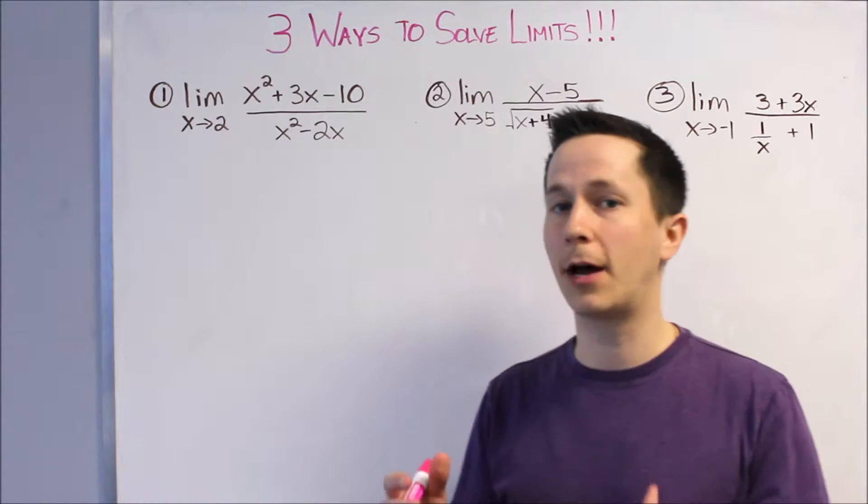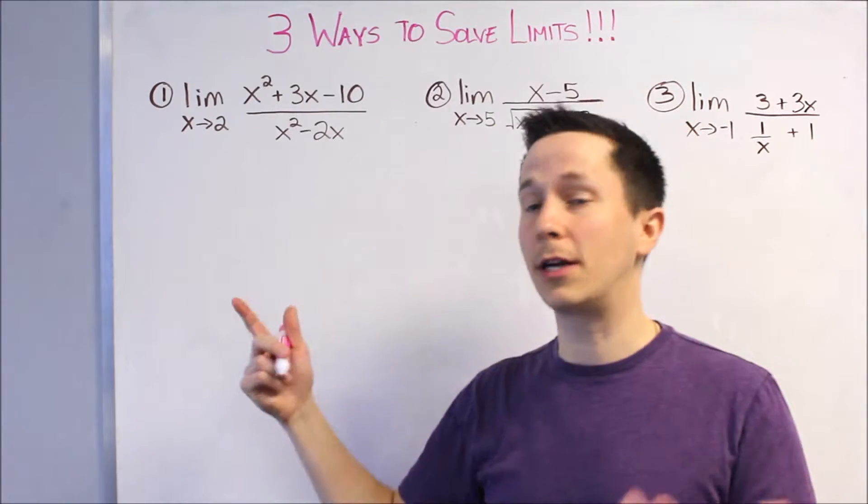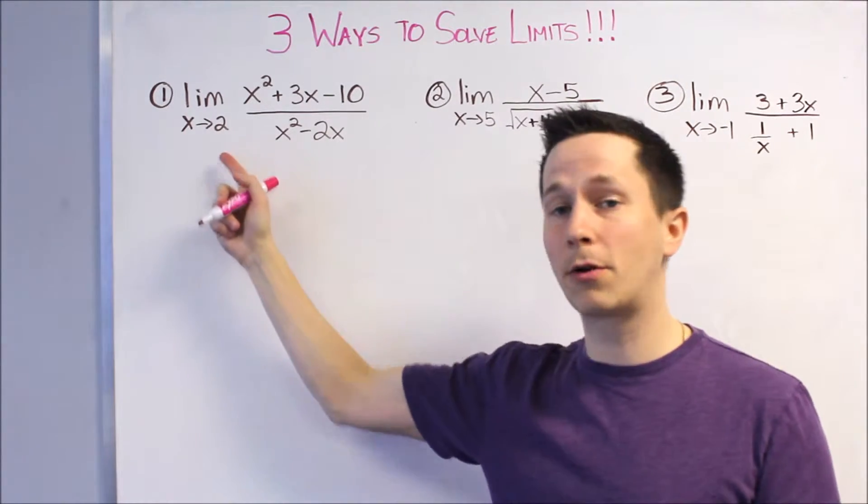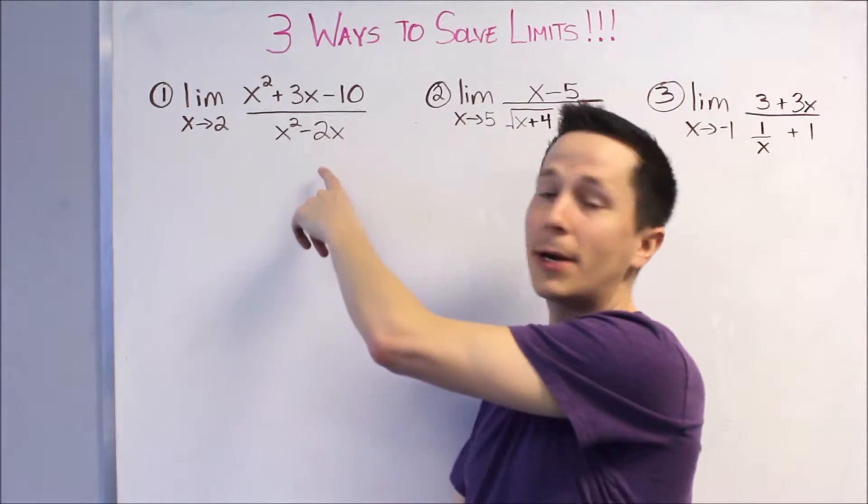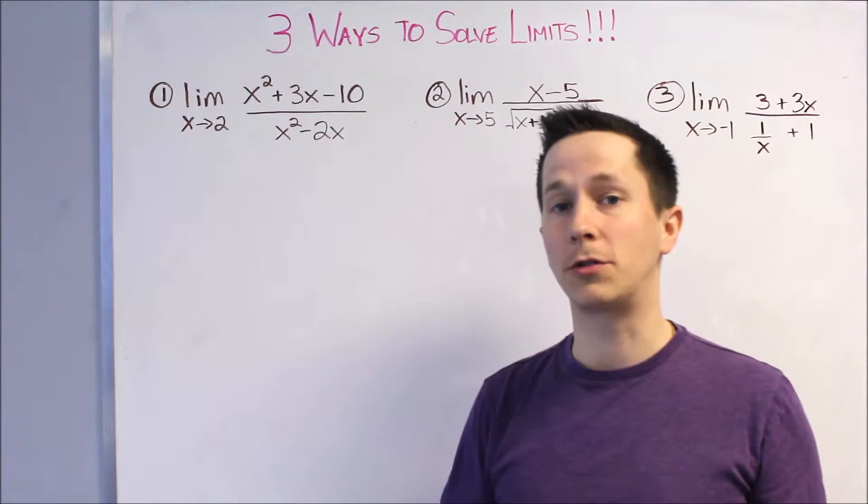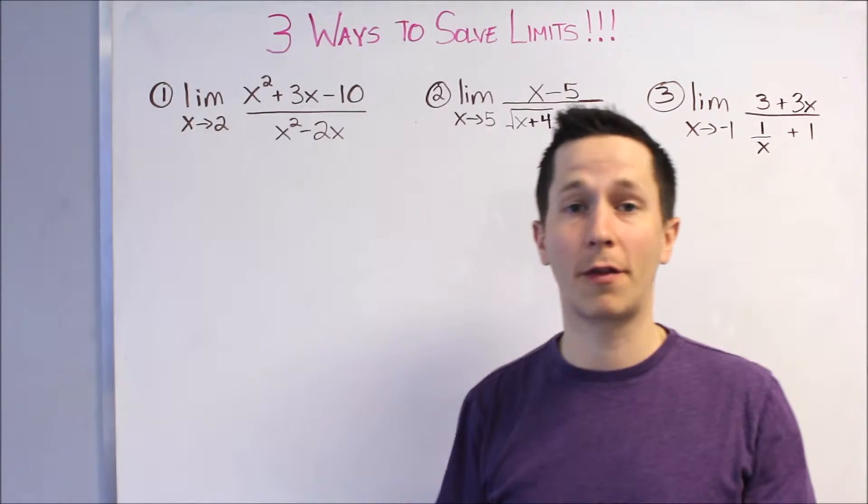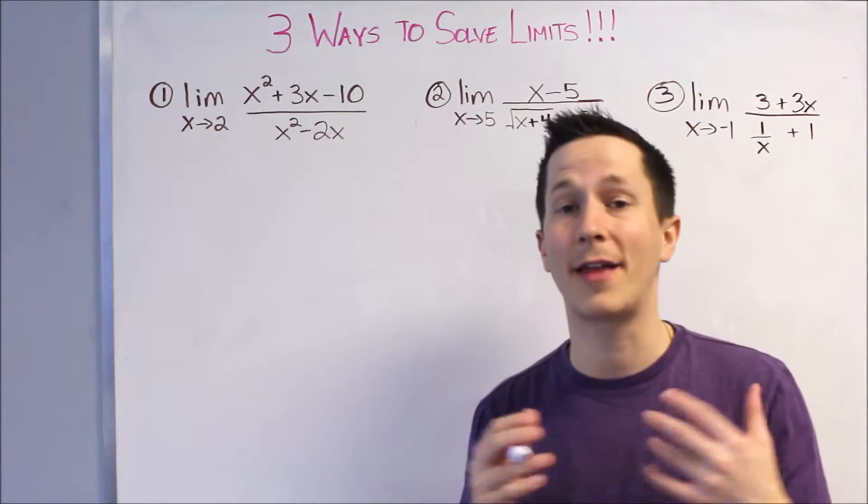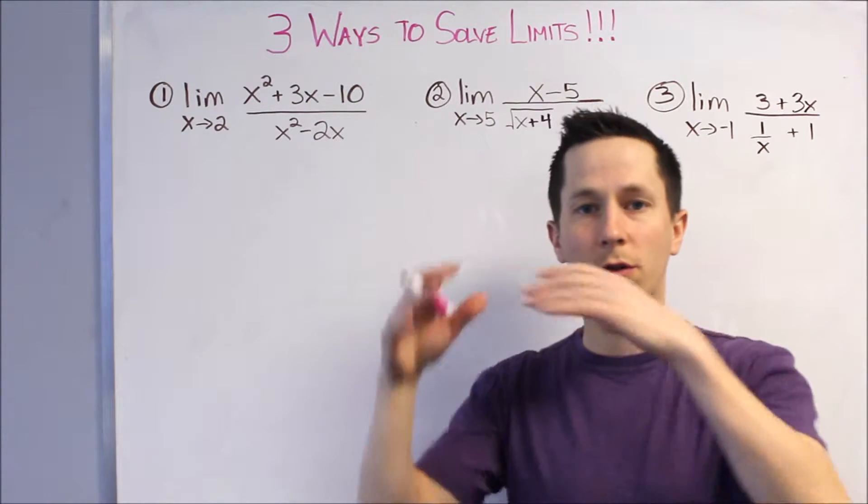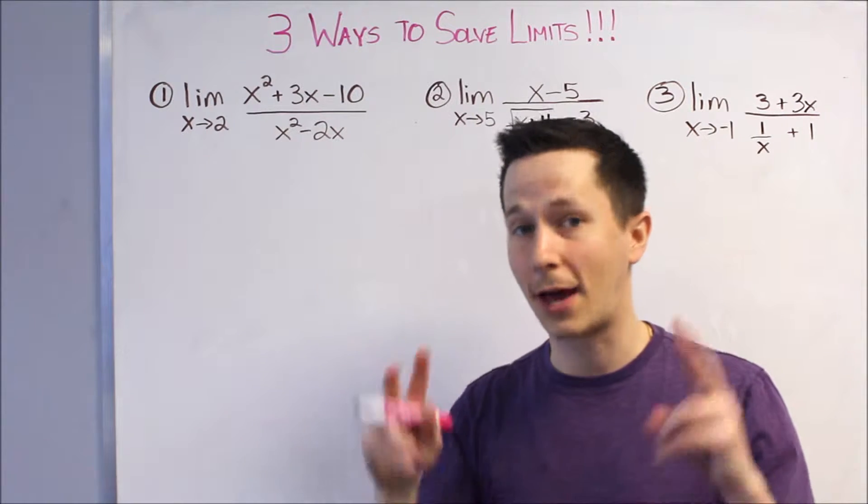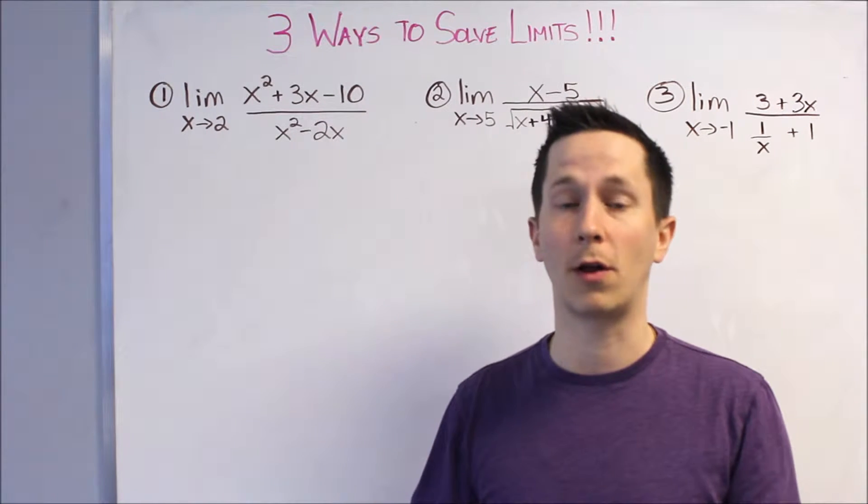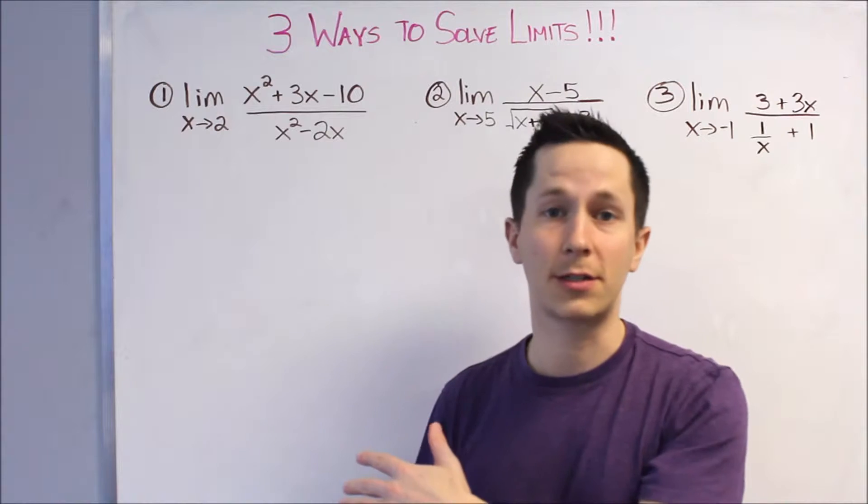Remember, solving limits requires some algebra because generally, whatever value X is approaching, that's making the denominator of our function approach zero. So, for instance, in this first one, if we plug in 2 for X, we get 4 minus 4 on the bottom, and that is zero, and that's why that's a problem. So, we're always going to work through with algebra until that problem is gone and the bottom no longer goes to zero, then you can just sub the value in.